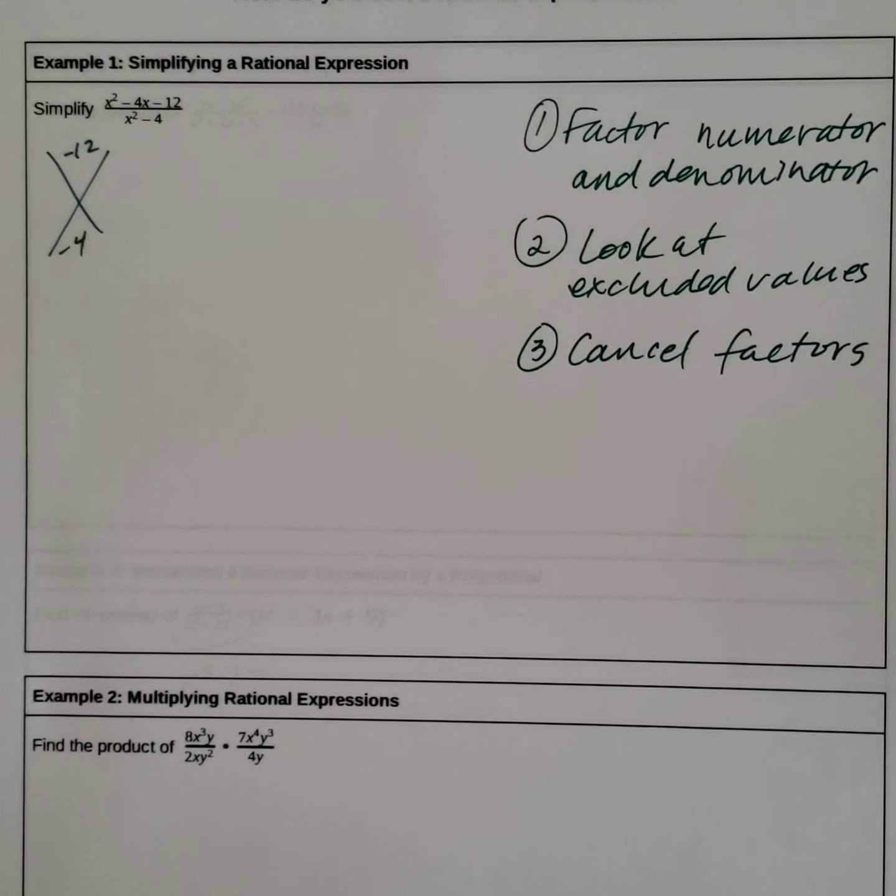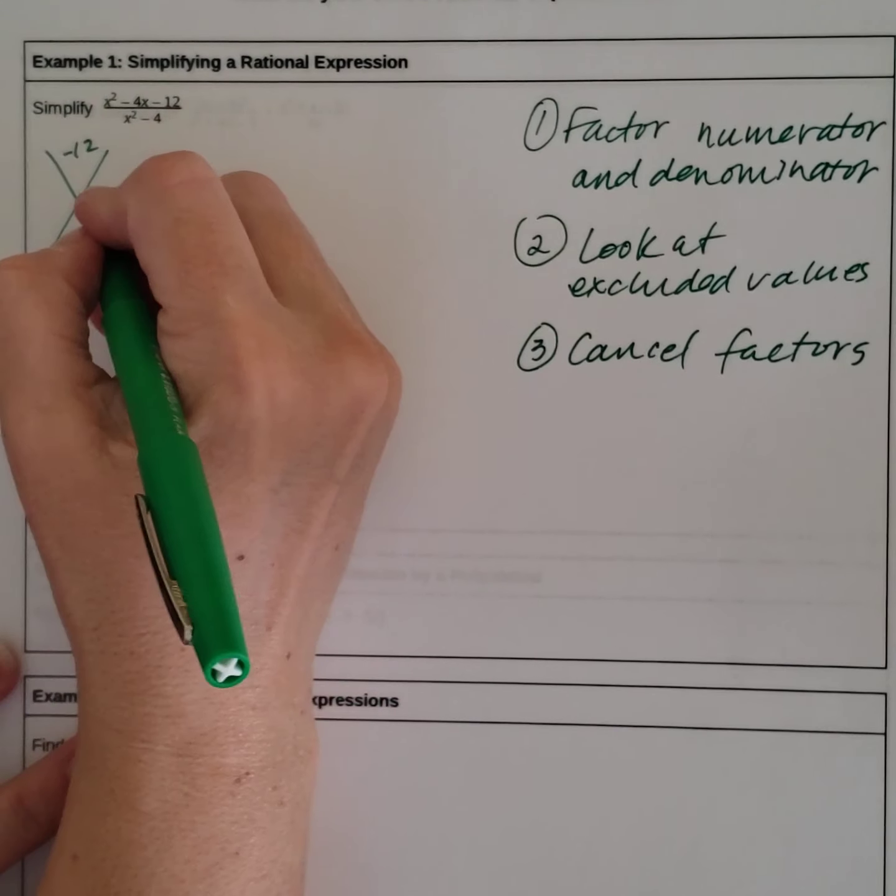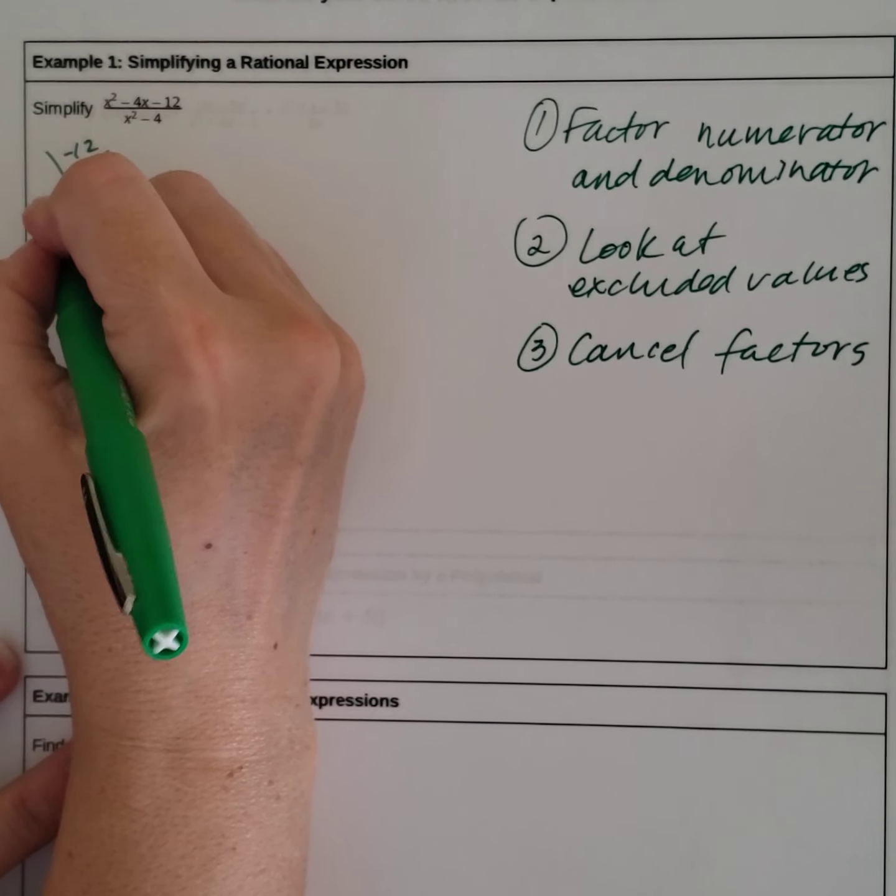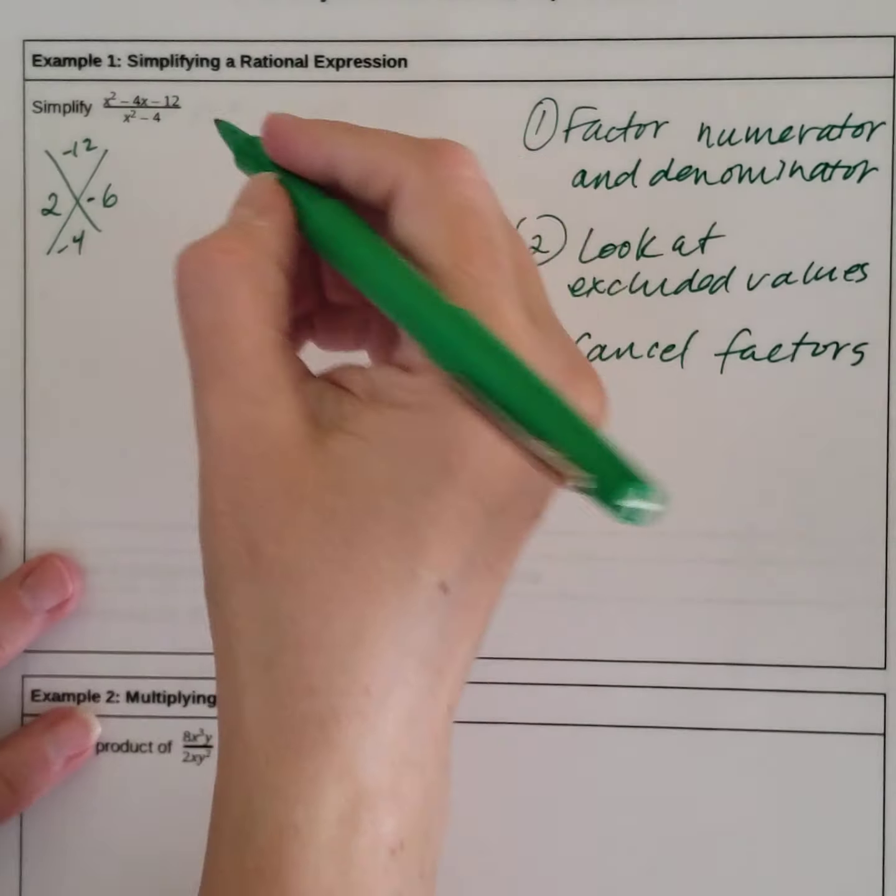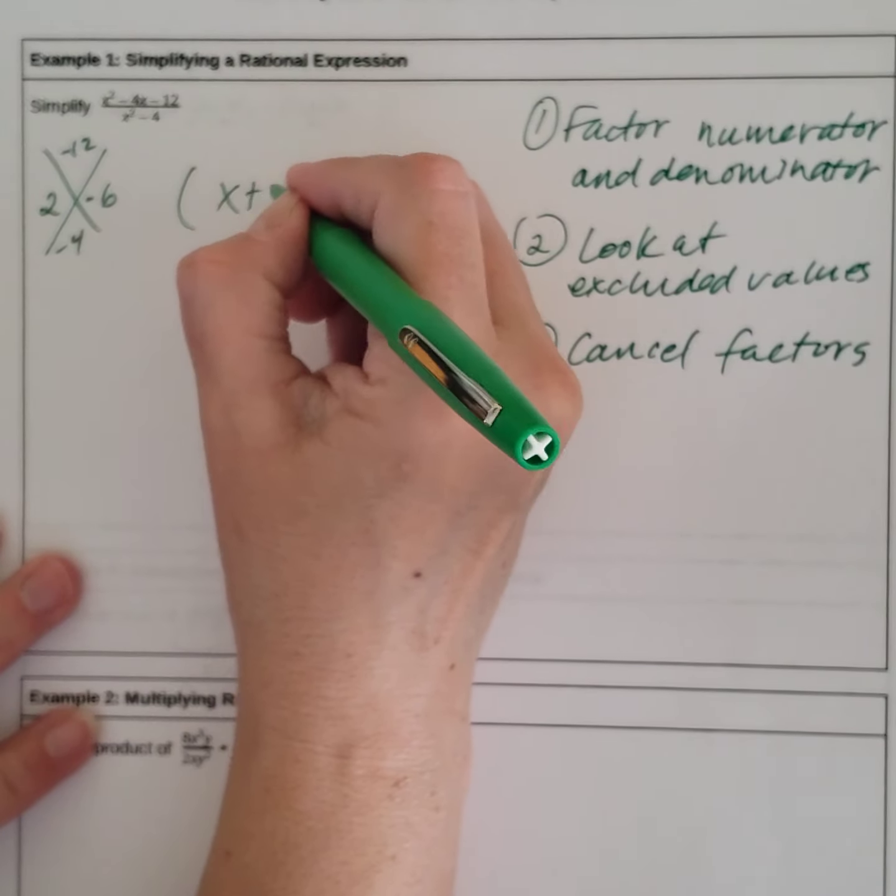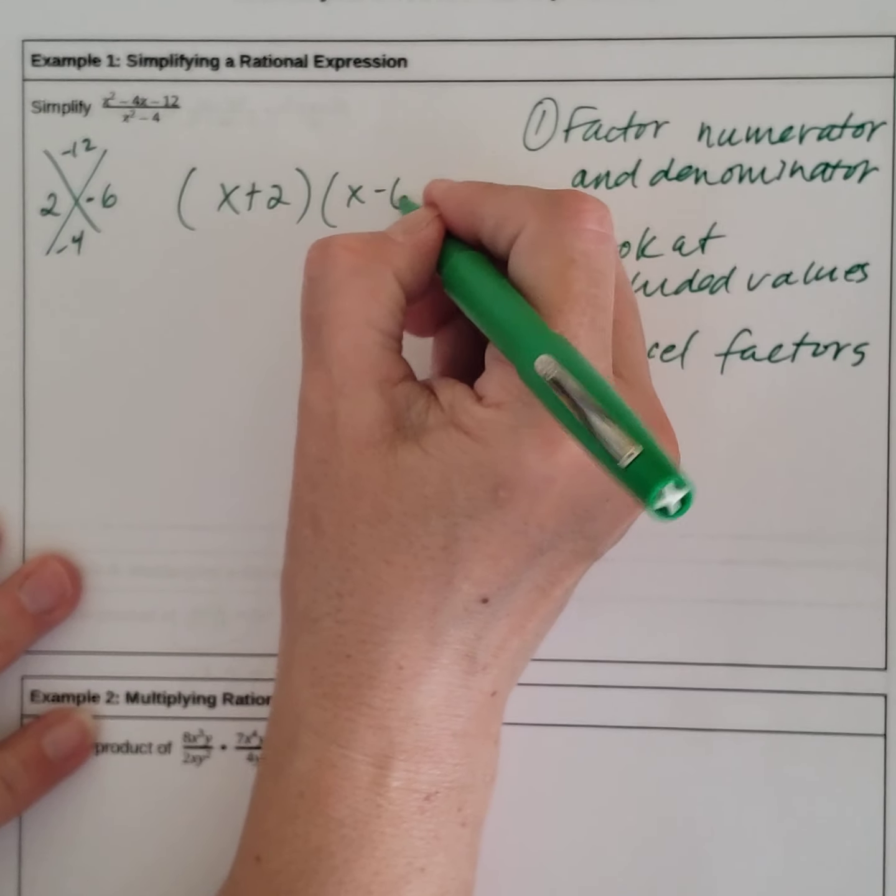So we need factors when multiplied give us negative 12 and when added give us negative 4. So 6 and 2 needs to be negative. So that gives us x plus 2, x minus 6.